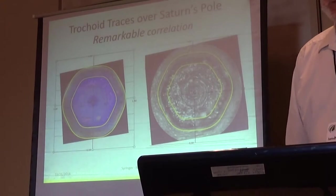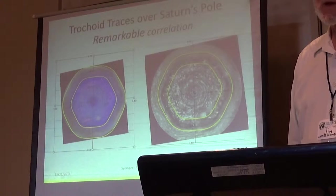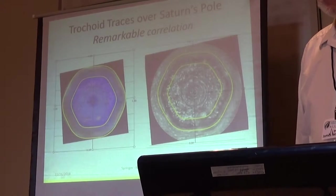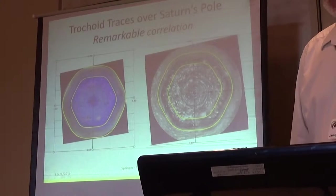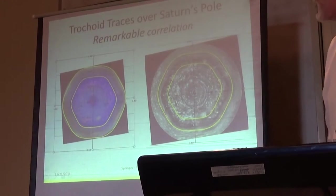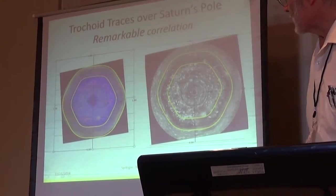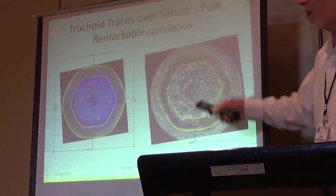So here are pictures of Saturn, the actual satellite pictures, with the two structures, the inner and outer hyper- and epitrochoid superimposed. We have two different pictures here. I don't know what the difference is to the two pictures, but you see that matches pretty well.